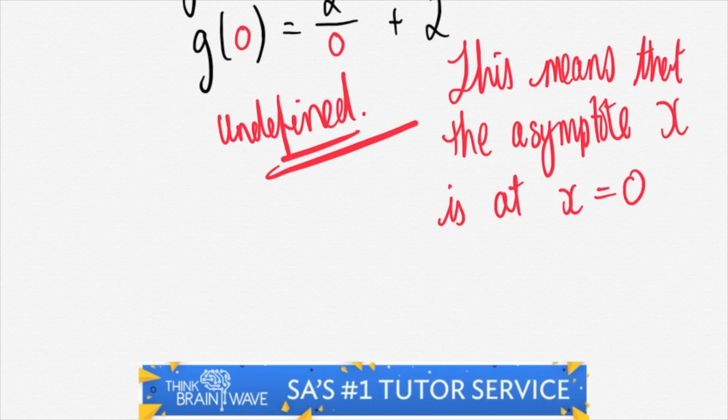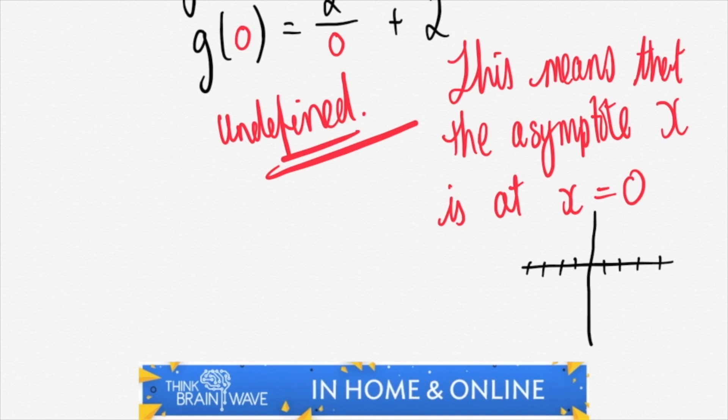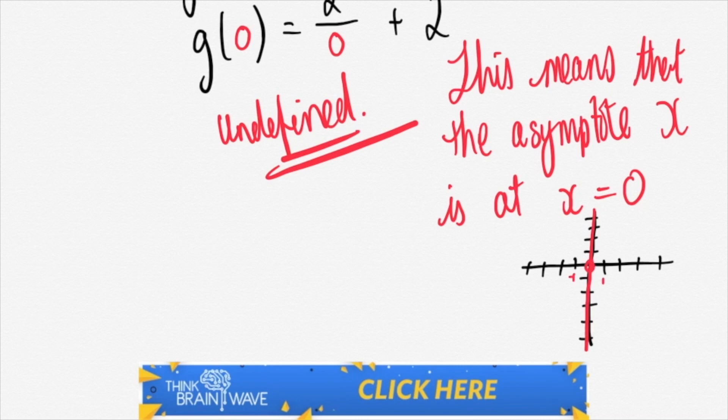So x equals 0, there's an asymptote. We've already established that earlier on. And there we go.